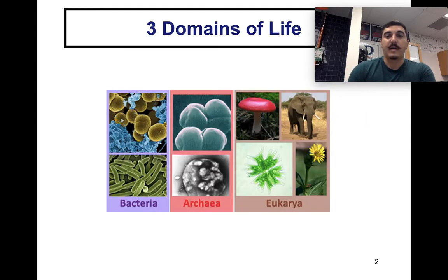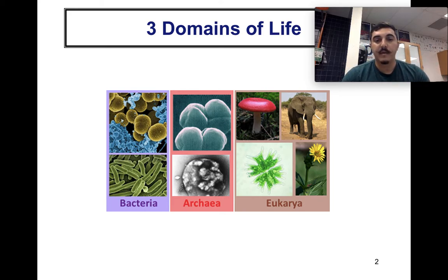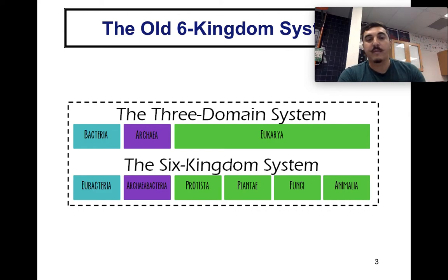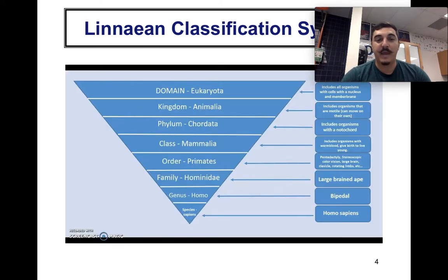In biology, we classify life into three domains: Bacteria, Archaea, and Eukarya — essentially everything that's living. There used to be a six-kingdom system, but now we use the full hierarchy: Domain, Kingdom, Phylum, Class, Order, Family, Genus, and Species — remembered by the phrase 'Dear King Philip Came Over.'